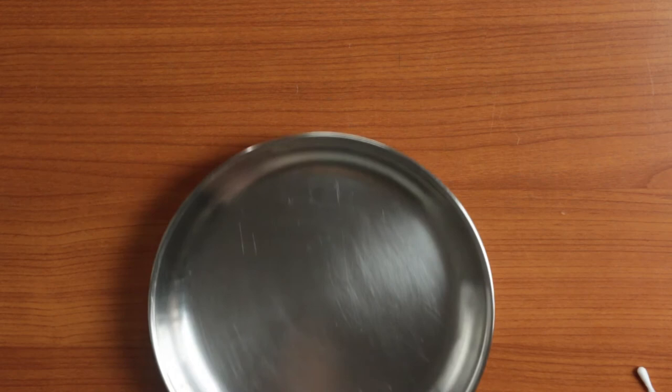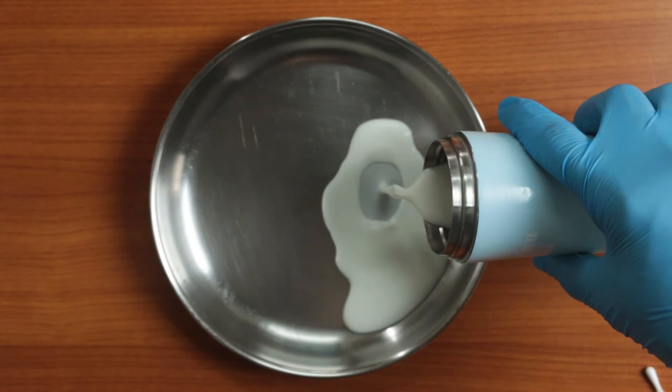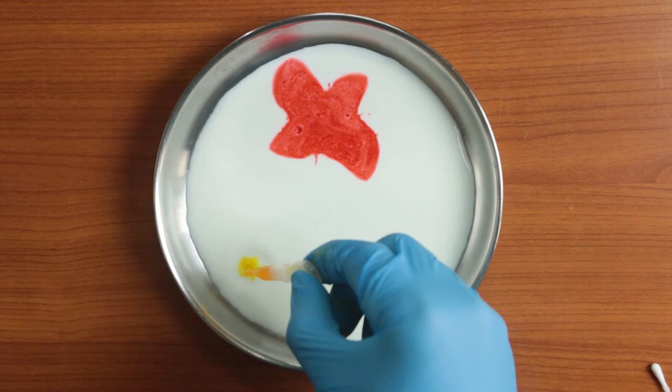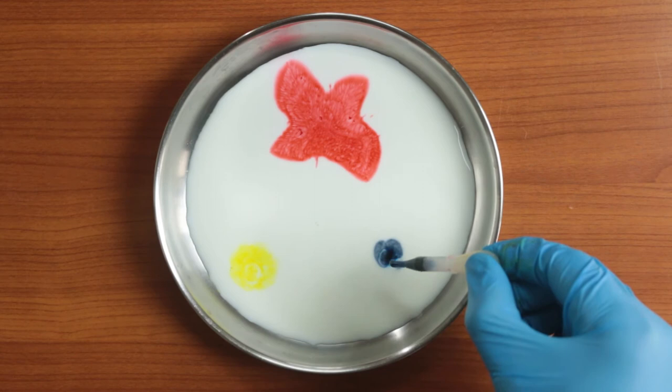Pour the milk into the plate. Try not to move the plate. You want the milk as still as possible. Put a few drops of each color in different places in the milk. The drops of color stay in place. Why?